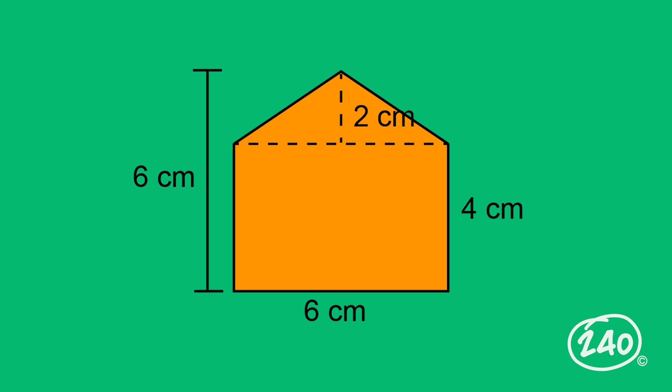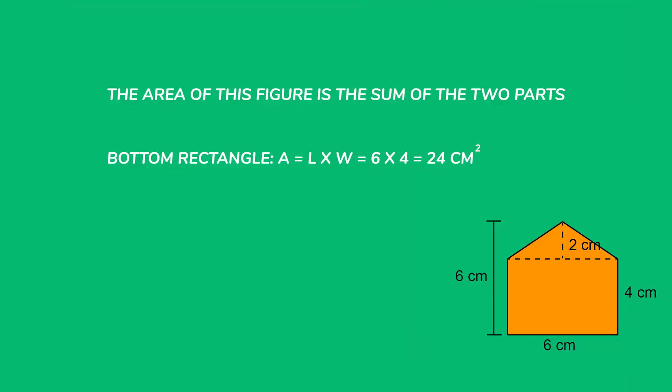The area of a rectangle is length times width. So in this case, six times four or 24. Then the triangle is one half times base times height. So one half times six times two or six. Add them both together. And the area of this shape is 30 centimeters squared. And here's the thing. In our study guide, we've got this information in the graphic you just saw. And we also have that same info in a video. So you can choose how you want to study.